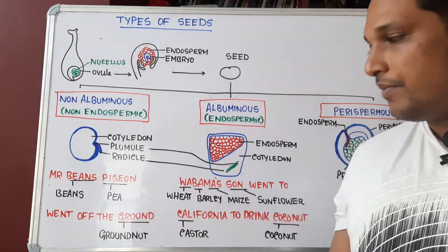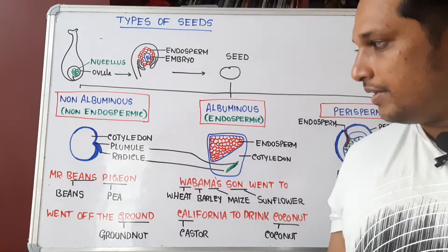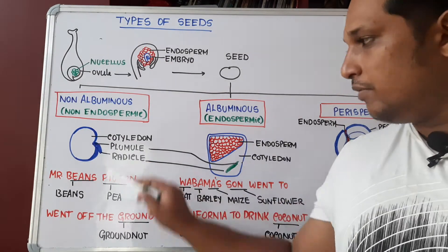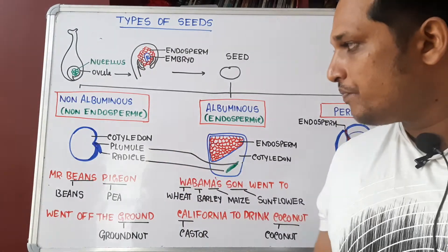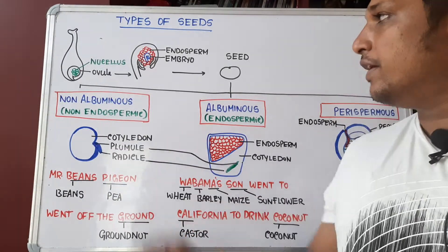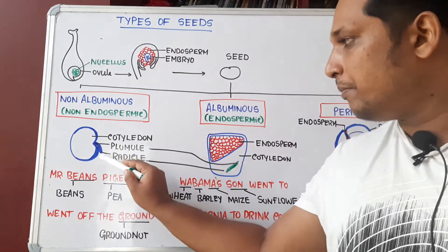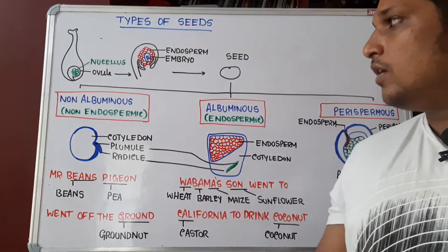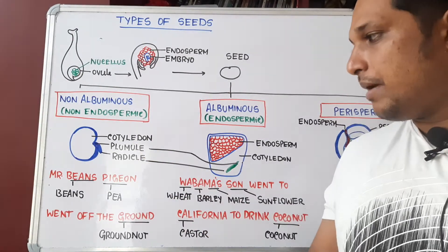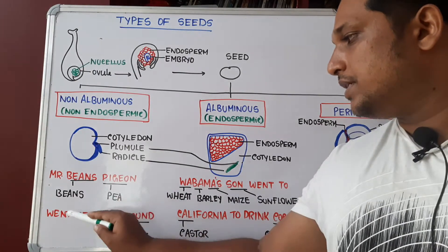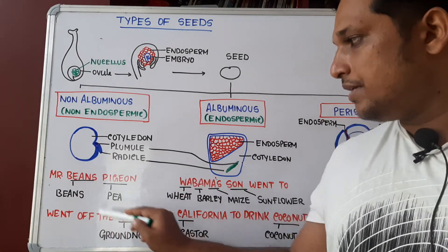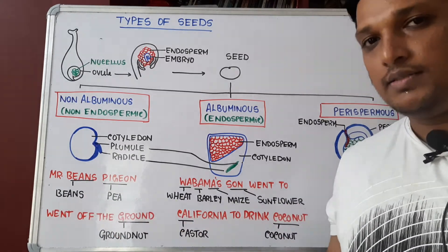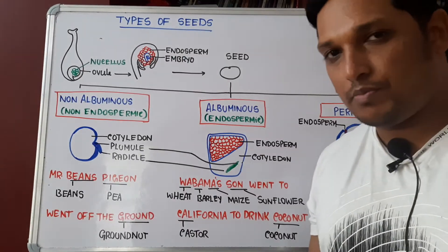Here a bean seed is shown — this is the cotyledon and this is the embryo part, with the plumule and radicle which develop into shoot and root. You don't find any remnants of endosperm because it has been completely consumed. Such seeds are non-albuminous seeds. A mnemonic: 'Mr. Bean's pigeon went off the ground' — bean, pigeon pea, groundnut — three examples of non-albuminous seeds.